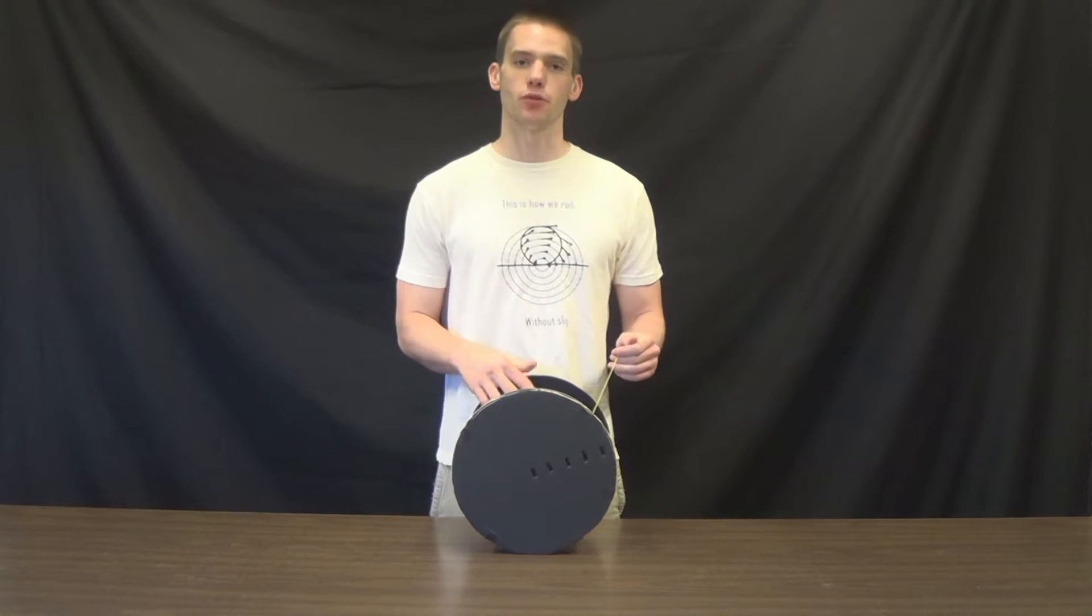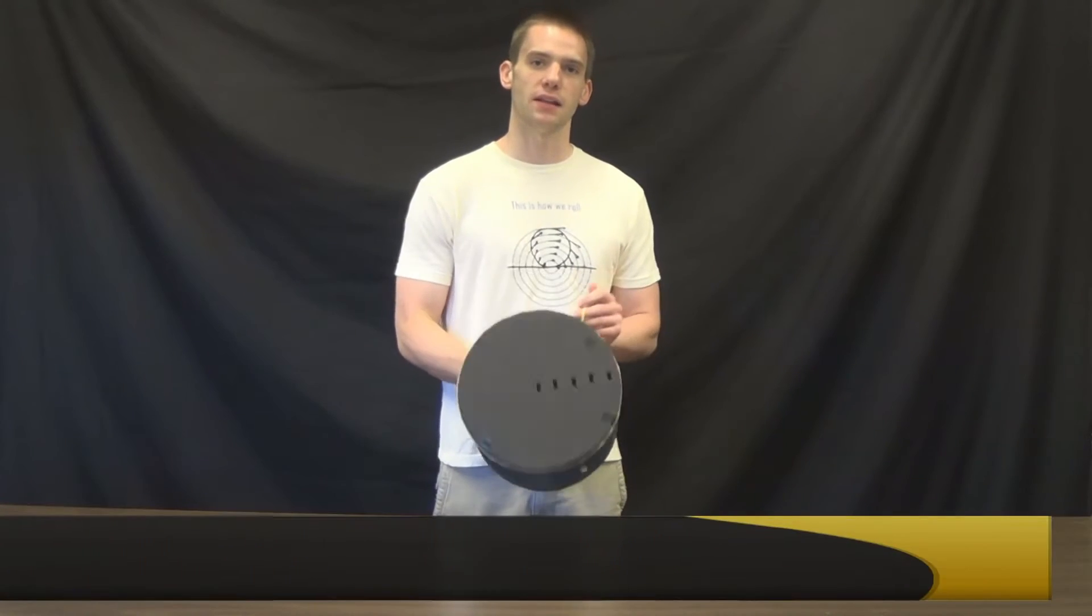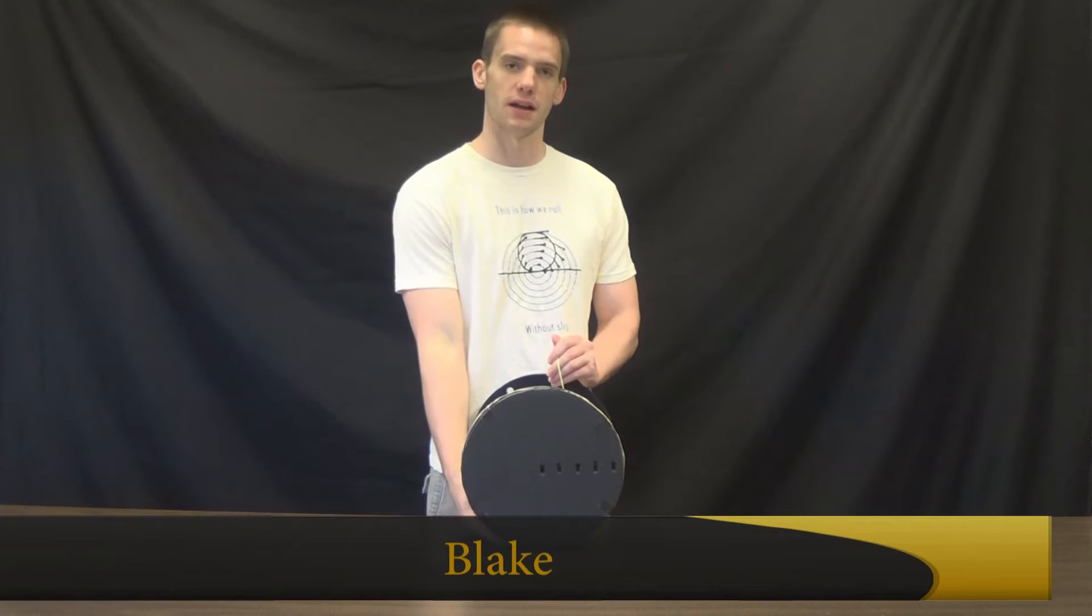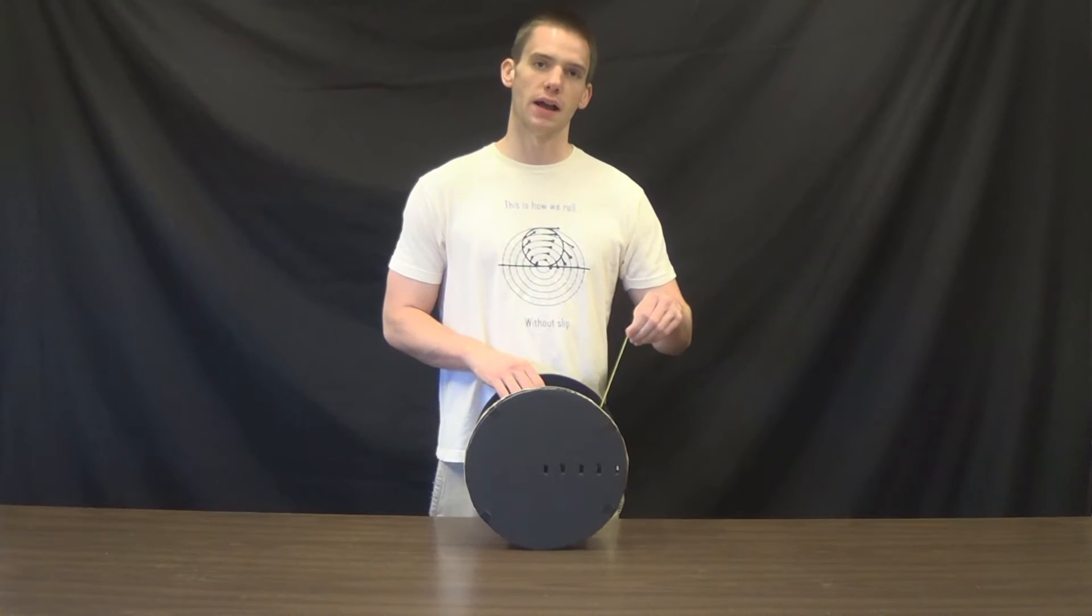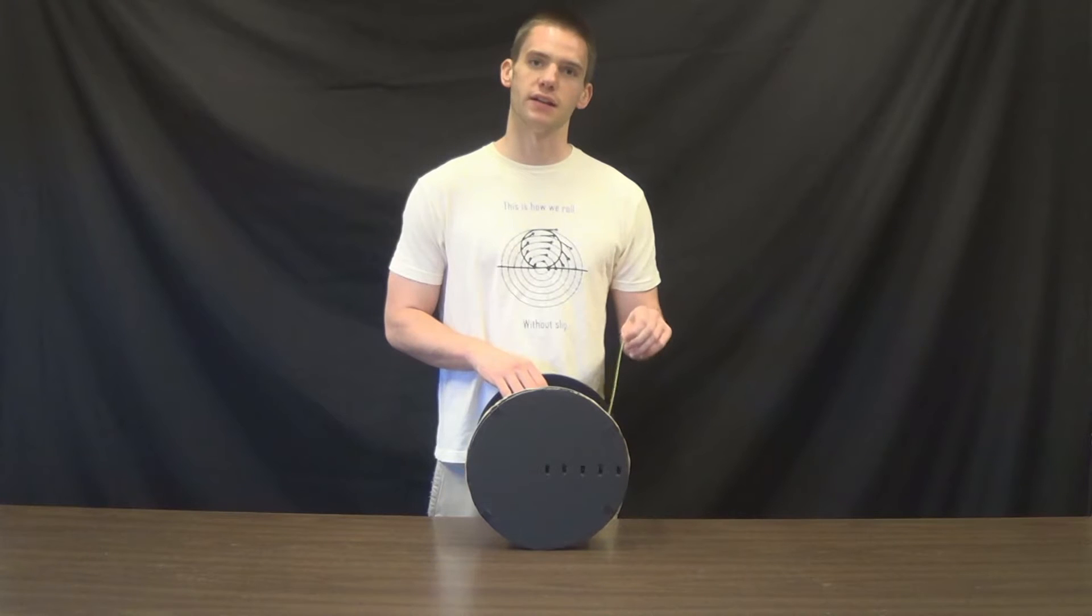Today we're going to predict the impending motion of this spool based on the information that it will roll without slip on its contact point here. And I will apply a force tangent to its inner radius with this string.